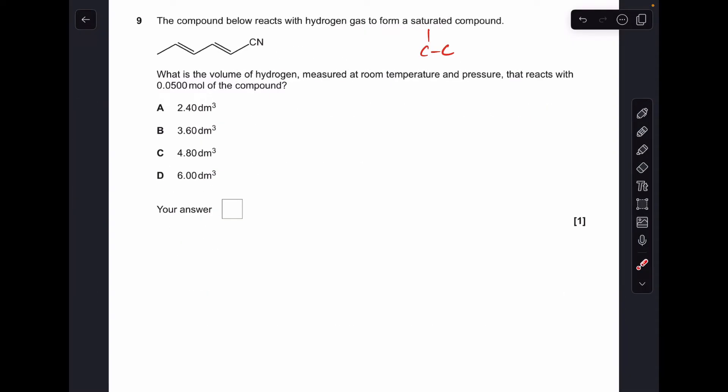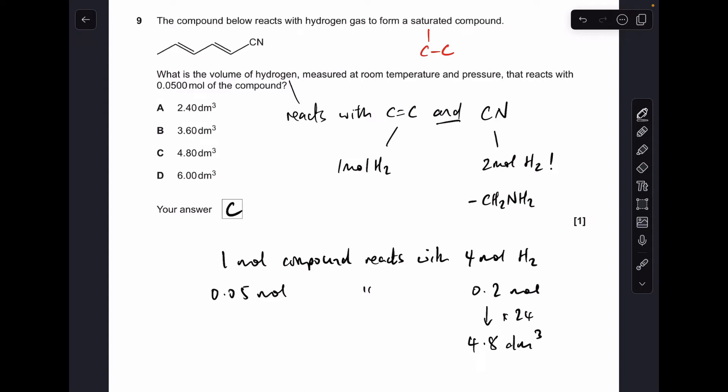Number nine. The first thing to appreciate is we've got to make a saturated compound. So the carbon-carbon bonds in the product are all going to be single bonds. So what part of this compound does react with hydrogen? It's the C-C double bonds and the C-N bond, this nitrile group. So each of the C-C double bonds in the molecule reacts with one mole of hydrogen. However, the nitrile group reacts with two moles of hydrogen. So this nitrile group is going to become CH2NH2. So you can see there's two moles of H2 involved there. So that means that one mole of the compound is going to react with four moles of hydrogen. So therefore 0.05 moles of the compound is going to react with four times that, 0.2 moles of hydrogen. So all we need to do now is multiply 0.2 by 24 dm cubed and that will give us our volume. So that's coming out at 4.8 dm cubed. So the answer is C.